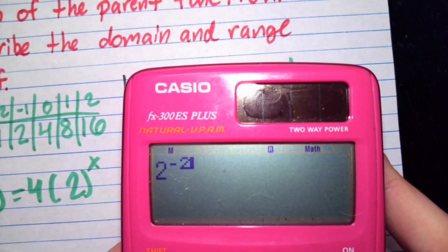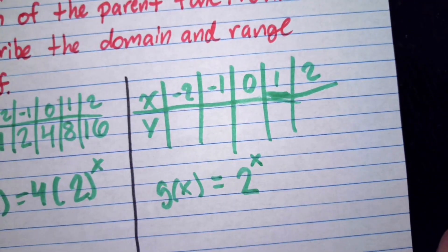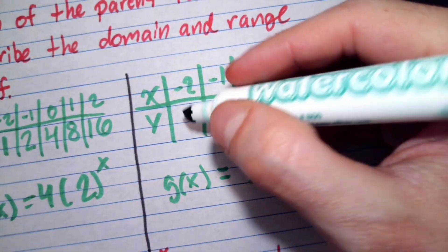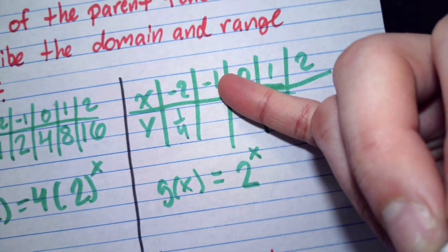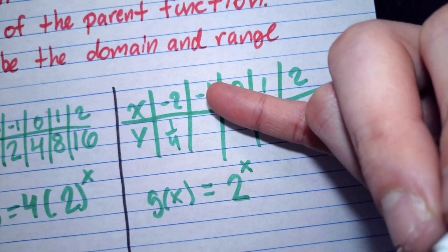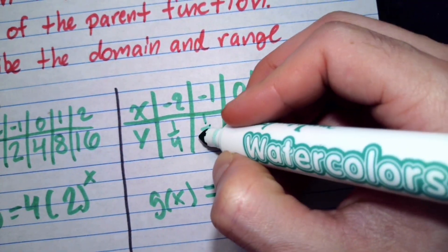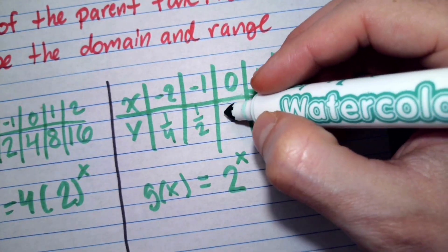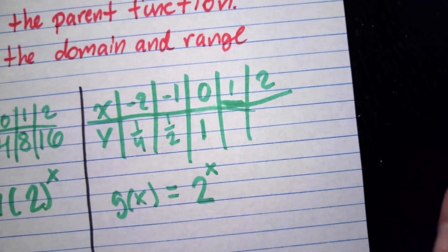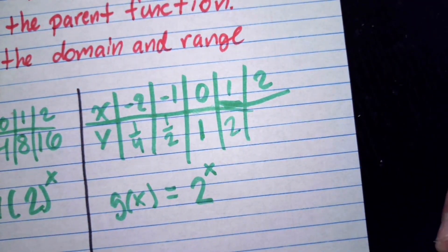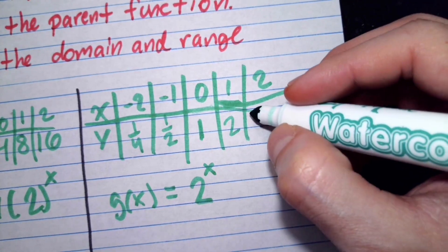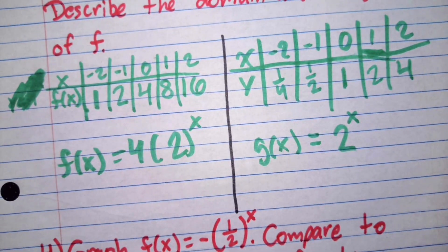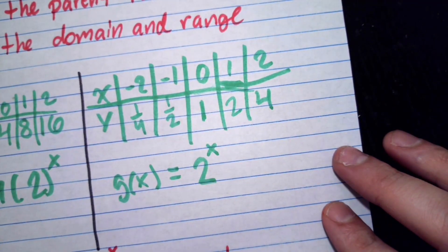2 to the negative 2 power gives me 1 fourth. So we get 1 fourth. 2 to the negative 1 power, that just means that we have to flip that 2. So we get 1 half. And then we have 2 to the 0 power. Like I said, anything to the 0 power is just 1. 2 to the first power is 2. And then finally, 2 to the second power will be 4. So here's both our table of values for f and for the parent function g.